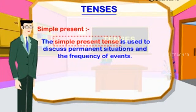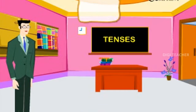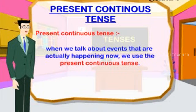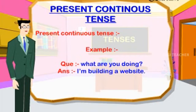Simple Present Tense: used to discuss permanent situations and the frequency of events. Example: 'I work on my website every day.' Present Continuous Tense: used when talking about events actually happening now. Example: 'What are you doing?' — 'I am building a website.'